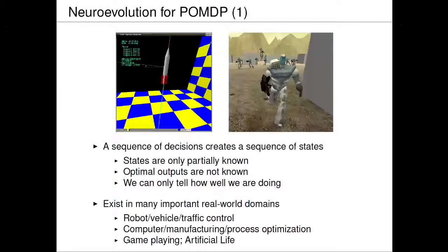I'll start with the more traditional POMDP-type neuroevolution. These are tasks where the decision maker has to make a sequence of decisions to achieve some good final state — for instance, controlling a rocket or an agent in a game. You only get rewards after a long period of time; you have to play the whole game before you know whether you win or lose. We only know how well we're doing — we don't have gradients, but we know when we're doing well. Many real-world problems are like that: traffic control, computer manufacturing, process optimization.